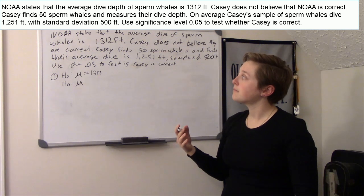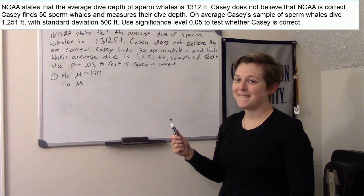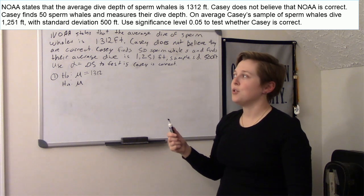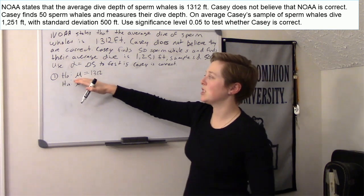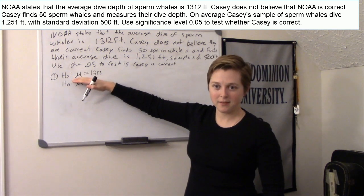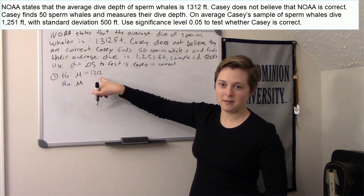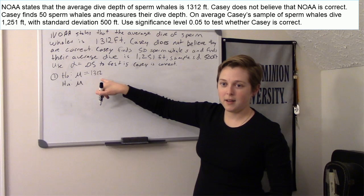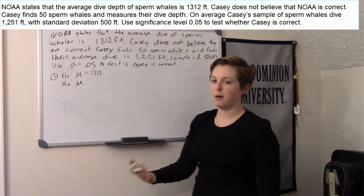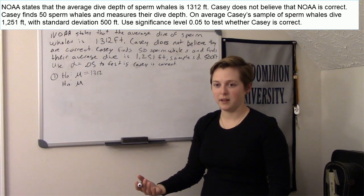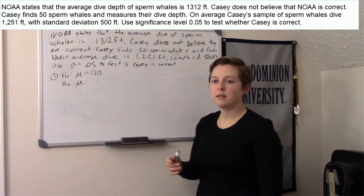The null is always what you're testing against — what's currently believed. It should never be your sample estimate, unless your sample estimate is identical to what's currently believed, which is very unlikely. You would rarely get the exact same number. In step three, we always assume the null is true, because that's what we're testing against.